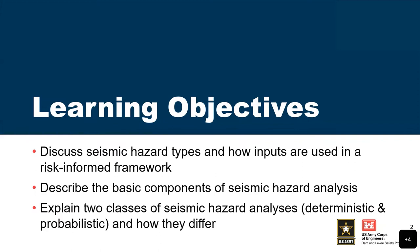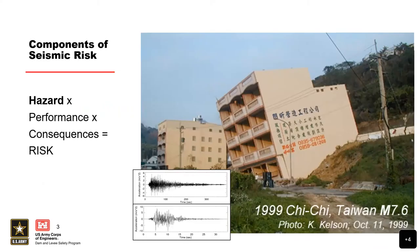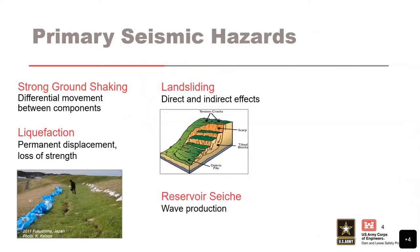Remember, this is about the hazard loading — the very first node in the logic tree. Risk is the component of the hazard times the performance — how does stuff do given certain loading — and then you add in the consequences. So this is a simplified geologist's perspective on risk, and we are focused only on hazard today in this lecture.